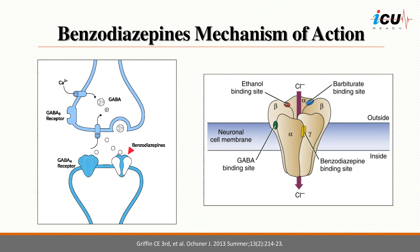We'll start with benzodiazepines. As you probably know, gamma-aminobutyric acid, or GABA, is the most common neurotransmitter in the central nervous system, found in high concentrations in the cortex and limbic system, and has an inhibitory effect on GABA receptors.